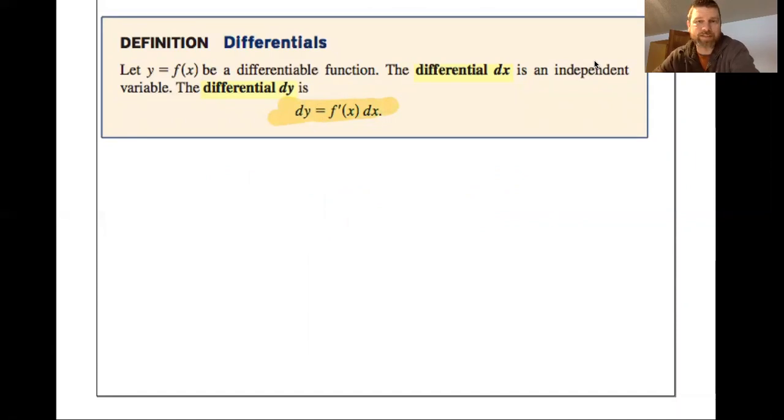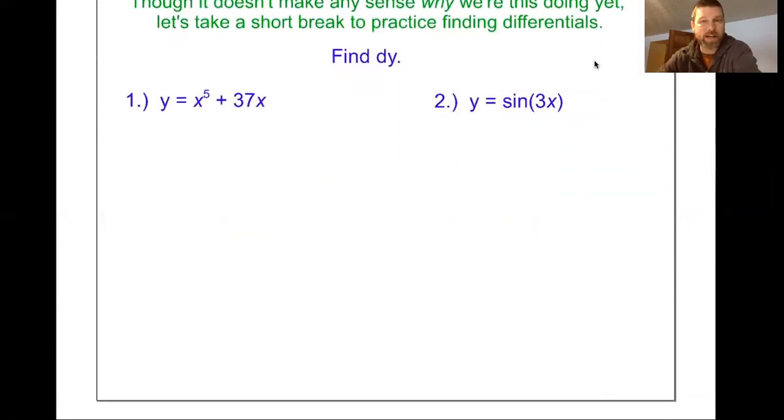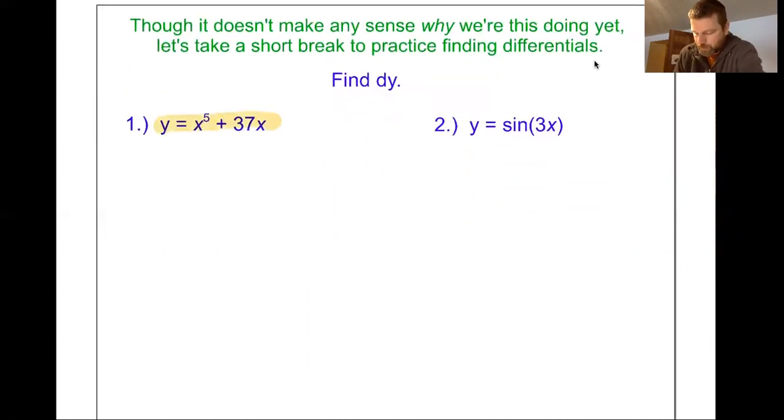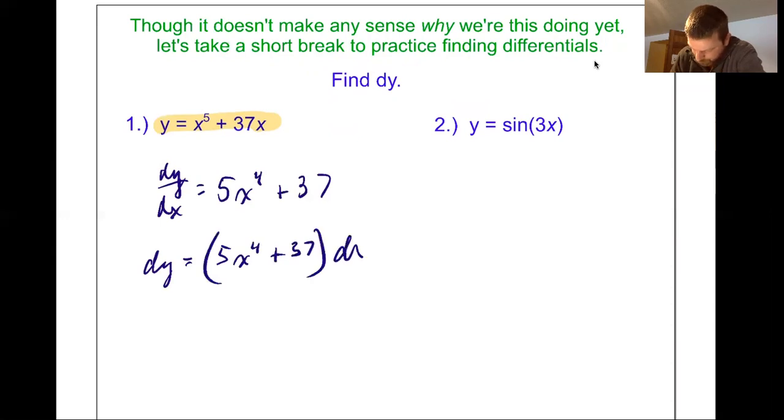Once we actually start working with this, it's going to make a lot more sense, but before we do that, let's just practice and make sure we have an idea of what it is. So I've got two problems here where we're going to find dy. I'll do the first one, and then maybe you could pause the video and try the second. So there's y equals x to the fifth plus 37x. I know that dy dx is 5x to the fourth plus 37, right? That's my derivative. So dy just by itself is going to be that 5x to the fourth plus 37, multiplied by dx. That's what dy is.